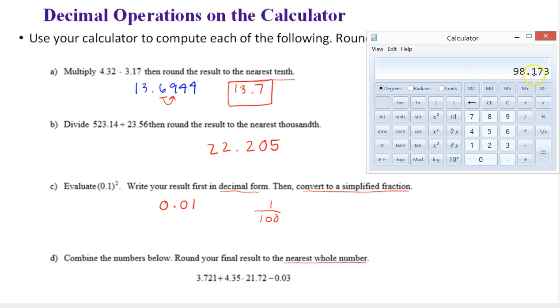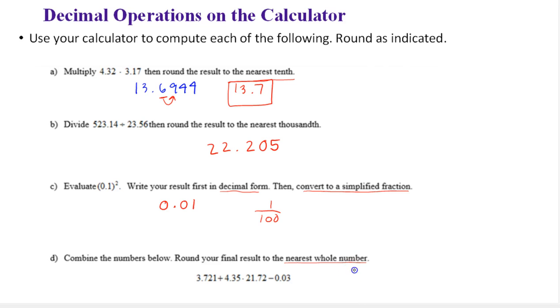The tenths is less than 5. So the nearest whole number, this is between 98 and 99. It's closer to 98. So our answer is 98.